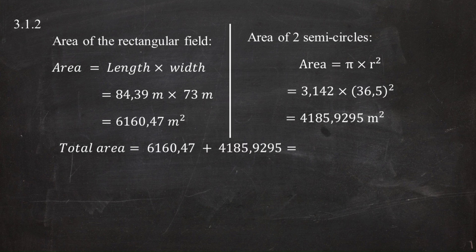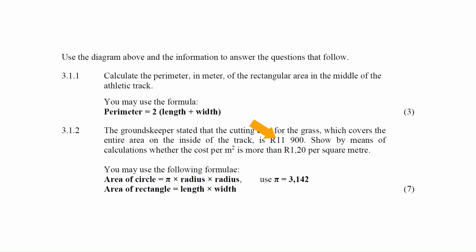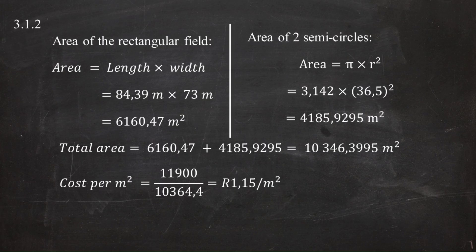The total area is 6,160.47 + 4,185.9295 = 10,346.3995 square meters. Dividing the total cost of 11,900 by this area gives a cost of R1.15 per square meter. Since R1.15 is less than R1.20 per square meter, we conclude the cost is less than R1.20 per square meter.